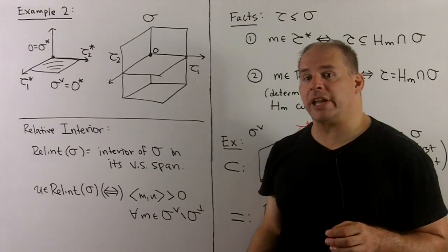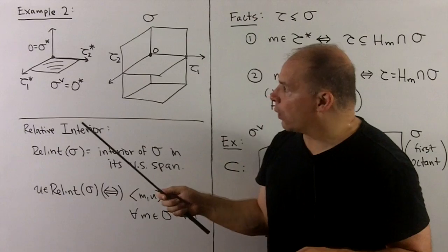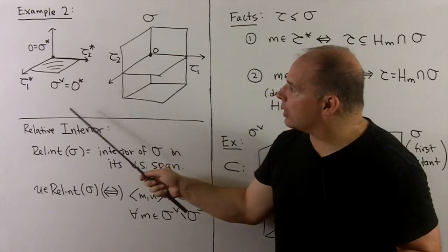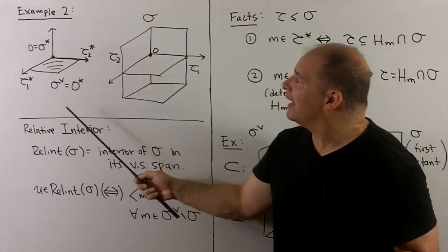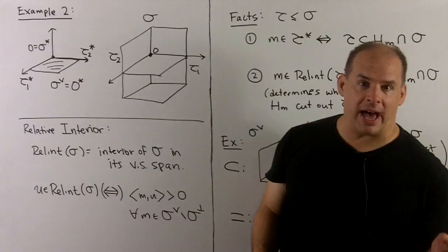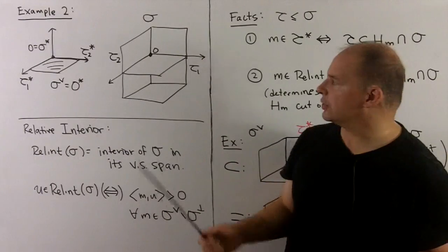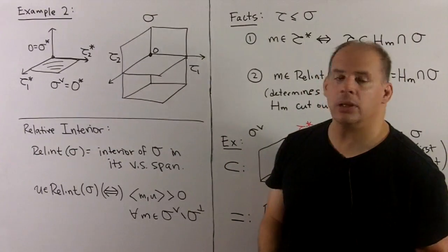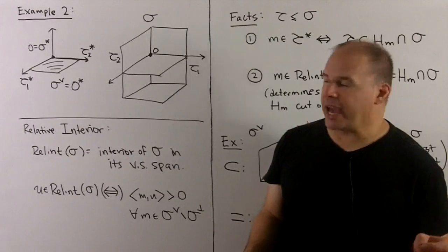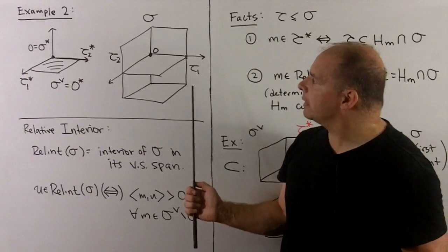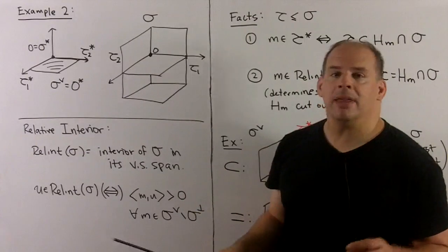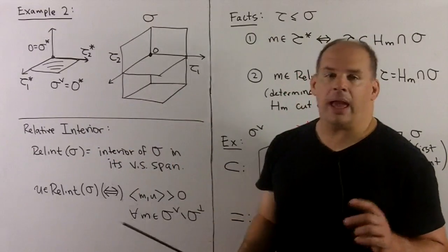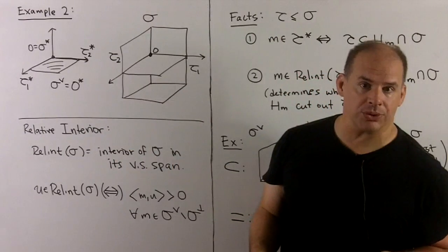With our usual example, you can immediately see the bijection. A somewhat more interesting example is example two from before, where sigma-check is lower dimensional and sigma is not strongly convex — here we just use the two forward options. I'll leave it to you to check the effects on the proposition, especially that the bijection is inclusion-reversing and that the dimension formula holds.